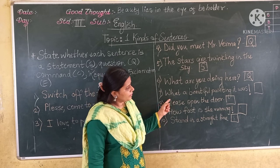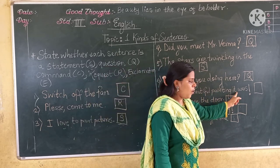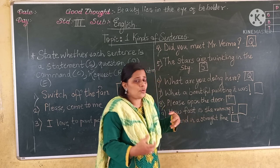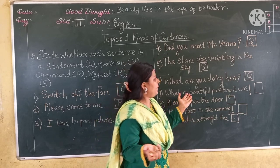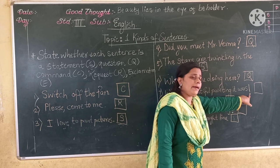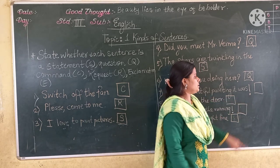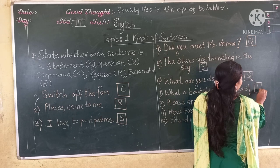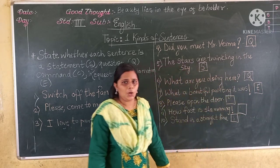Now the next sentence: What a beautiful painting it was! This sentence shows a sudden strong feeling, and it ends with an exclamation mark. So this is an exclamation. What are you going to write for exclamation? E.